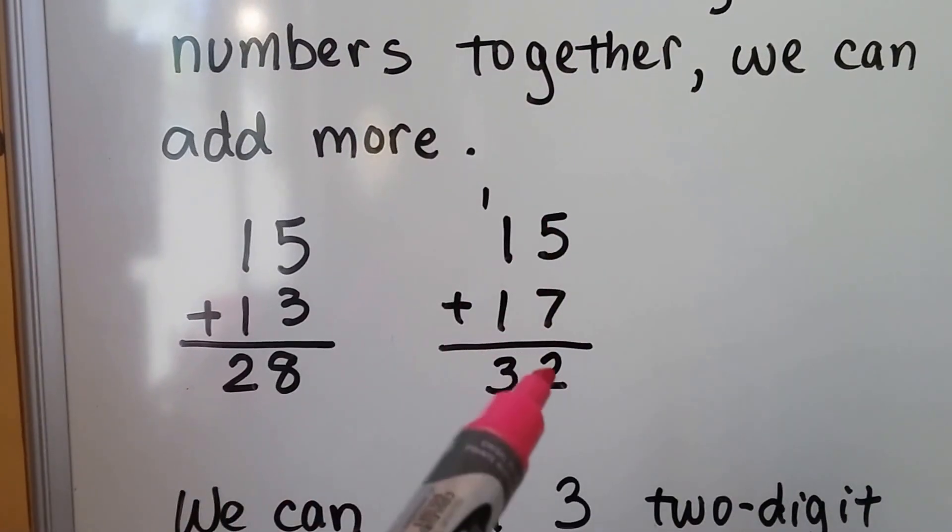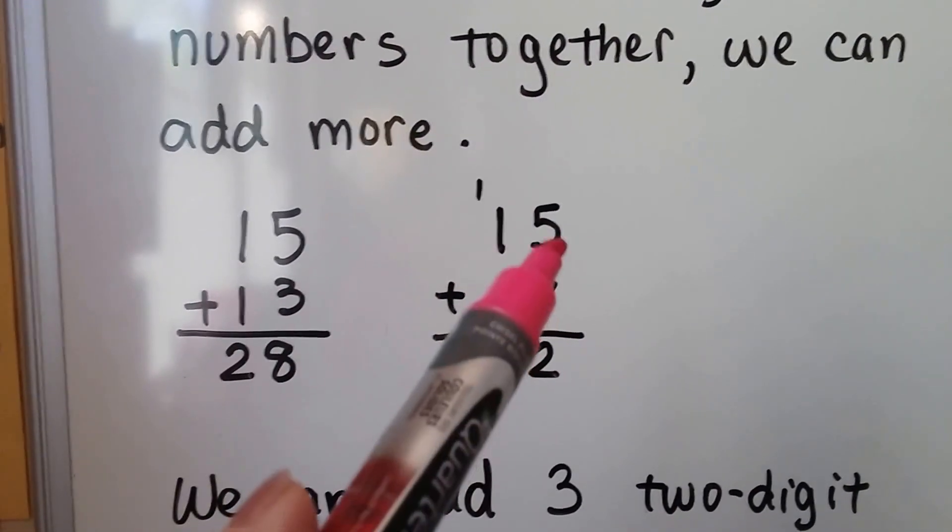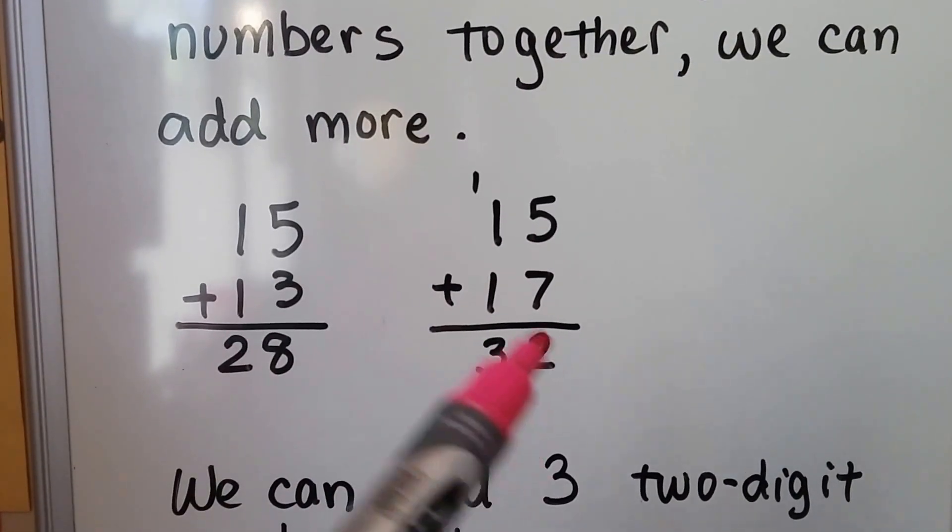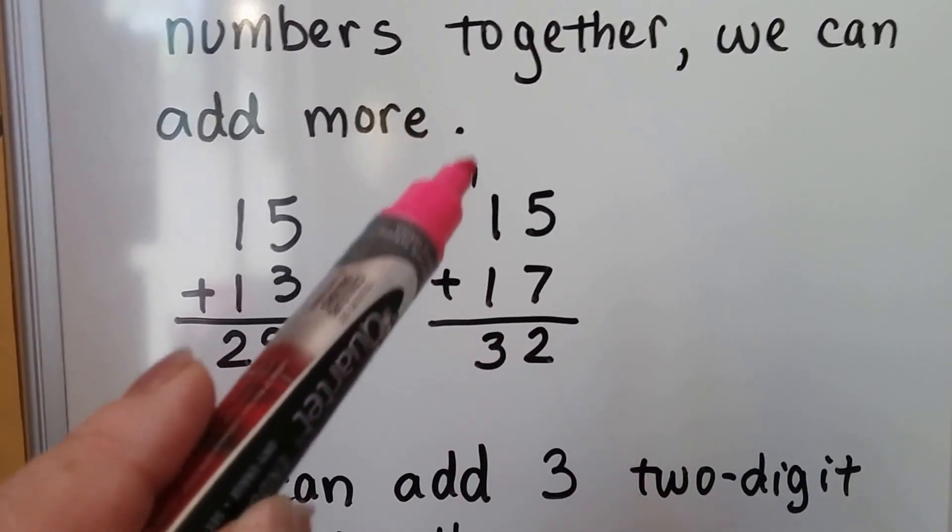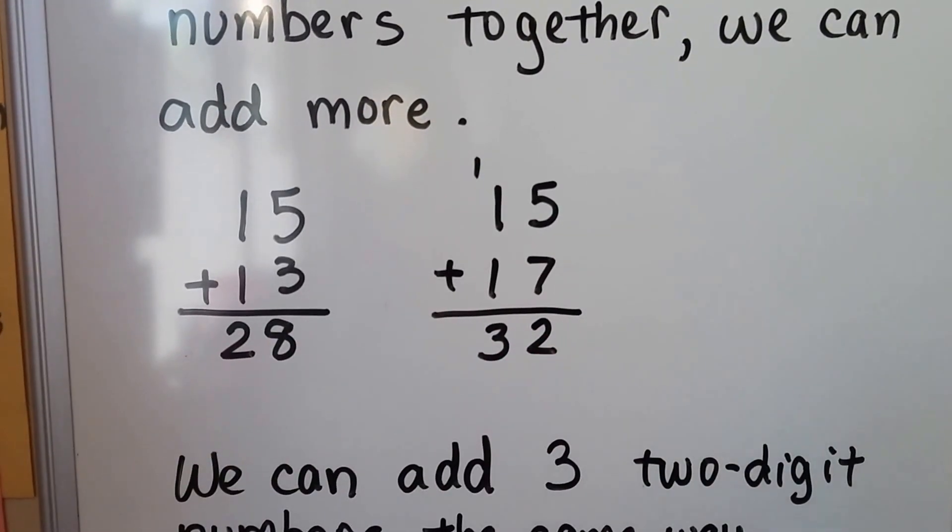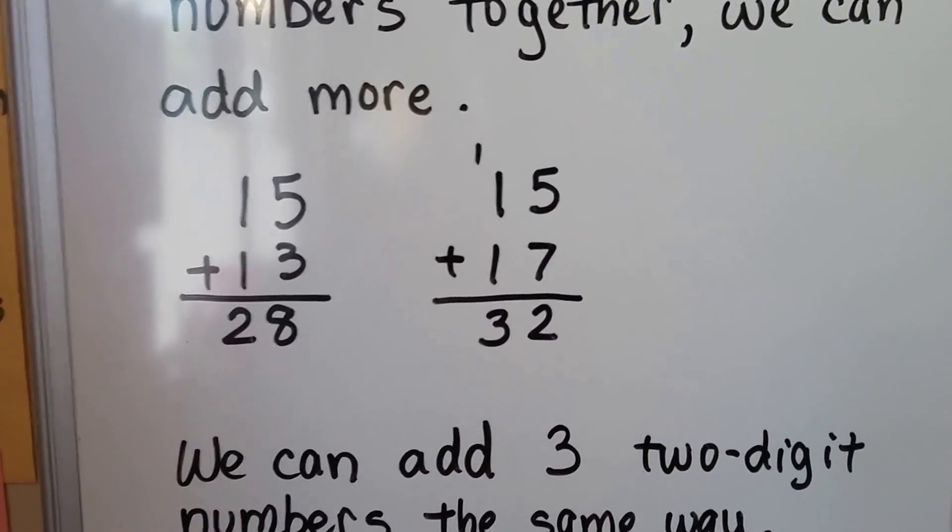We also know that when we add the ones column first, 7 plus 5 which equals 12, we regroup the 1 from the 12 to the tens place and we put the 2 down there, and then we add the tens column, right?